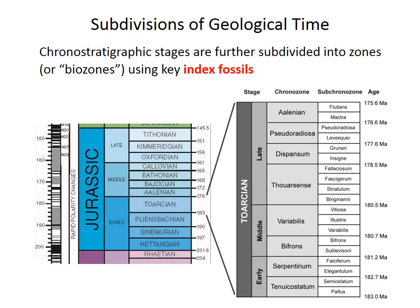These finer subdivisions called stages can even be further divided into zones or subzones using specific fossil groups called index fossils. The example at the bottom illustrates ammonite zones and subzones for the Toarcian stage, which is part of the early Jurassic. There are also other zonations for the Toarcian using different groups of index fossils, for example calcareous nanofossils.